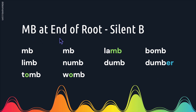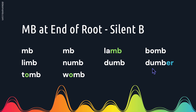If you have M-B at the end of a root, the B will be silent. So this sound is mm. Lamb — a lamb is a baby sheep. Bomb. Limb. Numb. Dumb. Here we have the root word dumb and we can add the suffix -er: dumber.